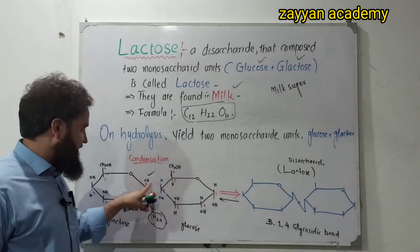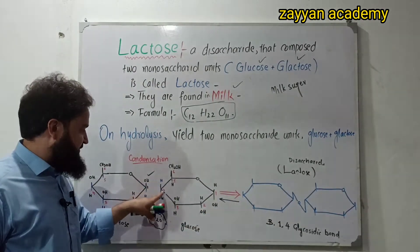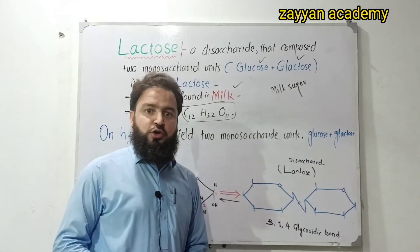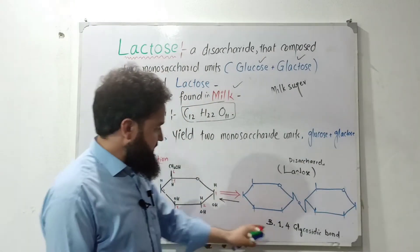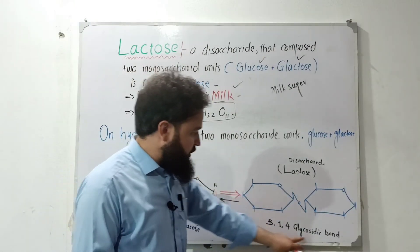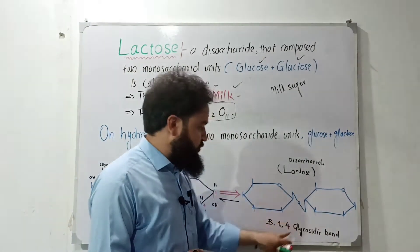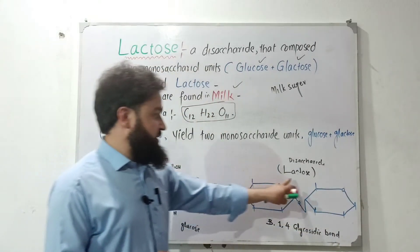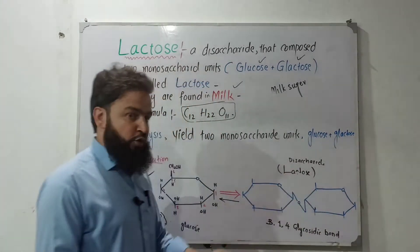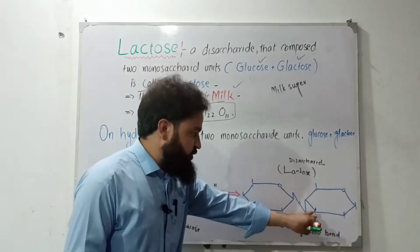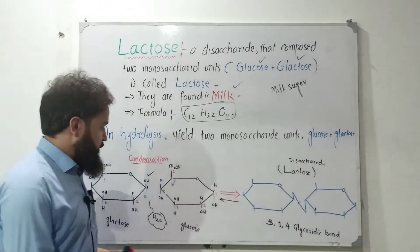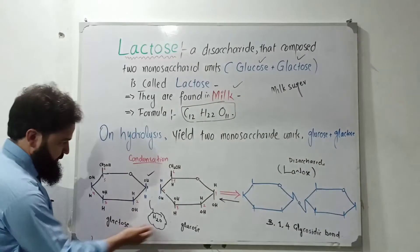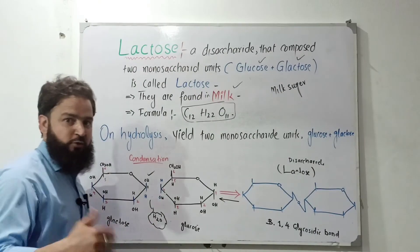The bond formed is a beta-1,4-glycosidic bond. This glycosidic bond connects the glucose and galactose units in lactose. Hydrolysis of this glycosidic bond breaks down the lactose molecule.